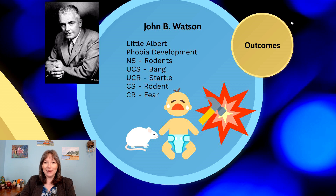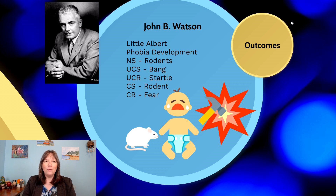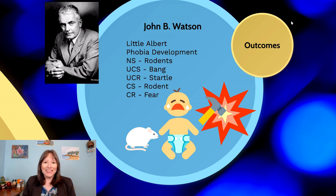In this phobia example, we know that originally, as mentioned with wasps, infants are not afraid of animals. They have to learn to be afraid of animals, and so Little Albert was not afraid of the cute white rat he was playing with. It was very calming. Rats are very smart, very gentle, and very affectionate social animals.